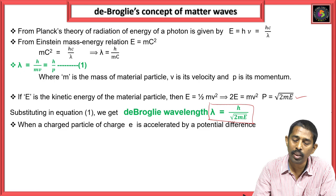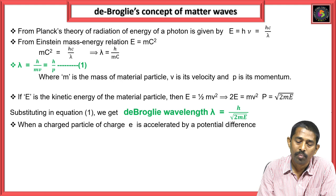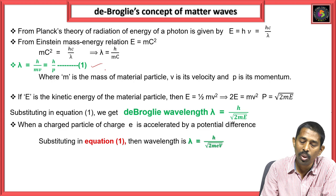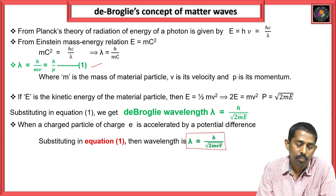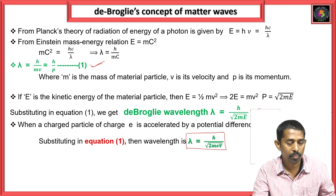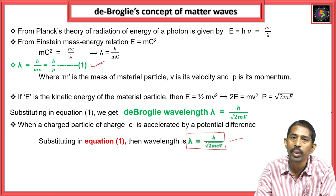Similarly, if the particle is accelerated between a potential difference V, we modify the equation. When the particle moves under a potential difference, the de Broglie equation becomes λ = h/√(2meV). And when the particle is in thermal equilibrium — based on the kinetic theory of gases — the kinetic energy E = (3/2)kT, where k is Boltzmann's constant and T is the absolute temperature. Substituting gives λ = h/√(3mkT).